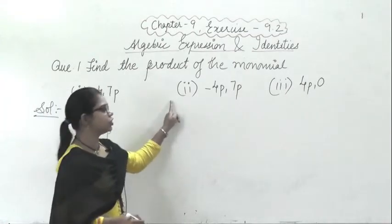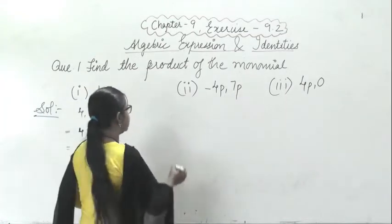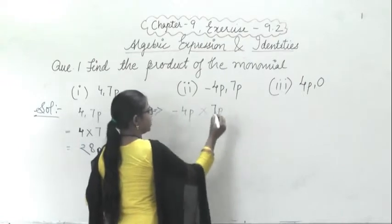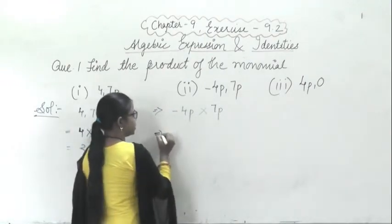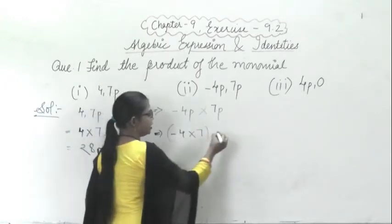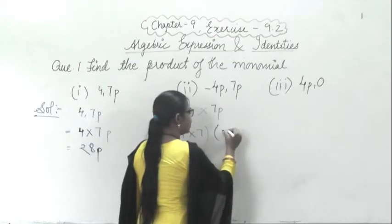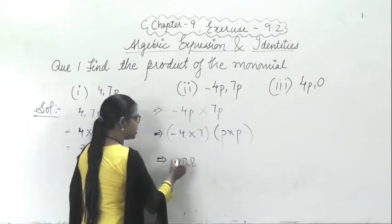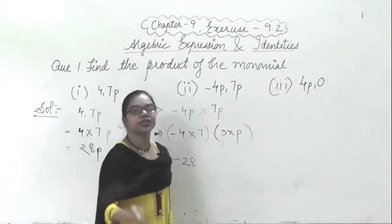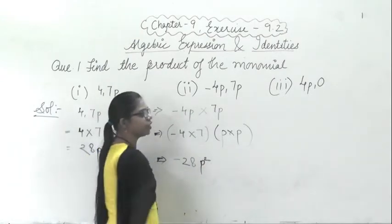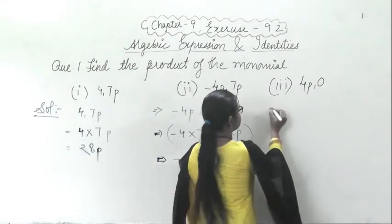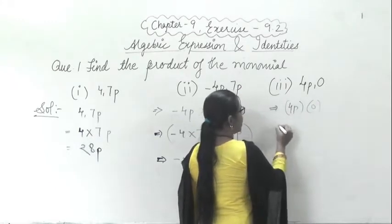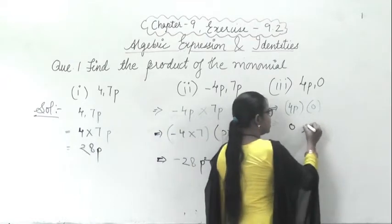Similarly, in the second question it says: minus 4p into 7p. So here it will be minus 4p into 7p. I can write this as minus 4 into 7, and p into p is p squared. So the answer is minus 28p squared. In the third question it is 4p into 0. Anything multiplied by 0 will be 0. So that is the answer.